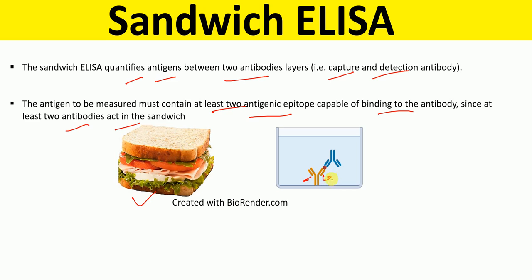This is the capture antibody, and the other antibody is called the detection antibody. And in between, as you can see, this is the antigen. So it is exactly like the sandwich — in the middle is the antigen, whereas on the sides, on top and on the bottom, are the two antibodies: the capture antibody and the detection antibody.